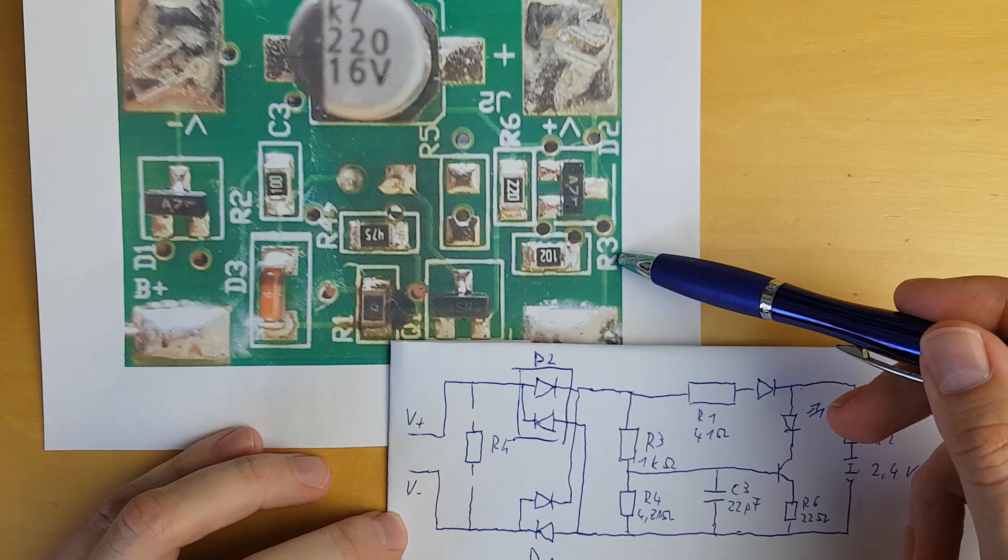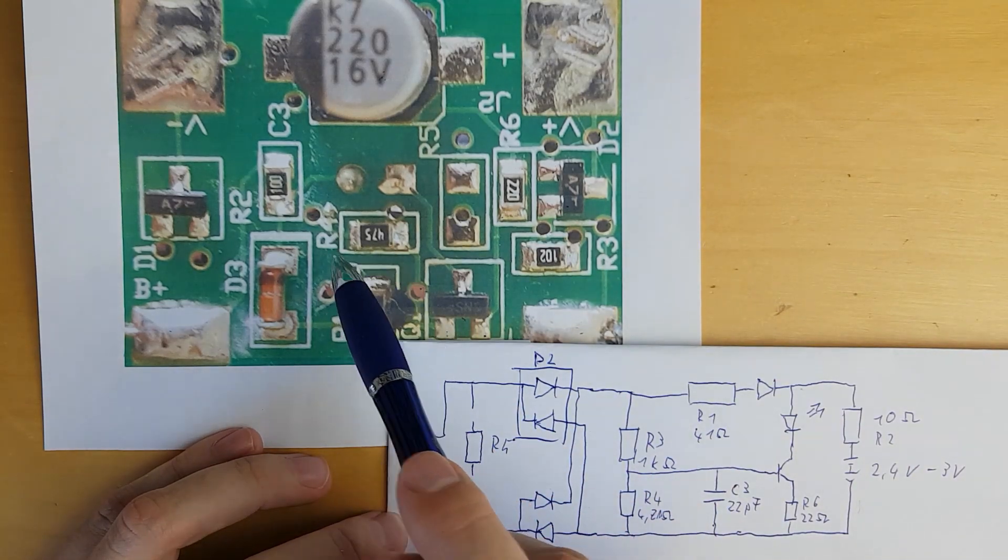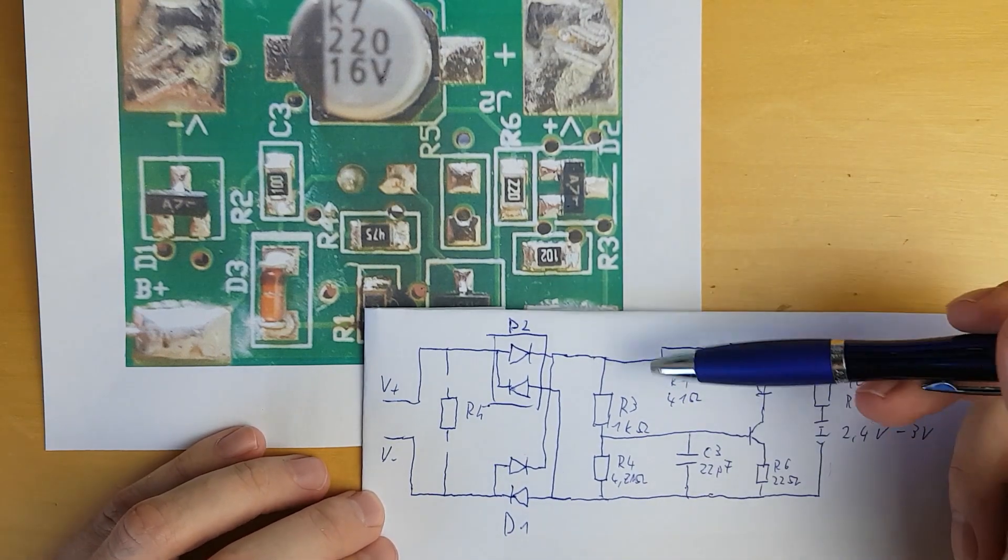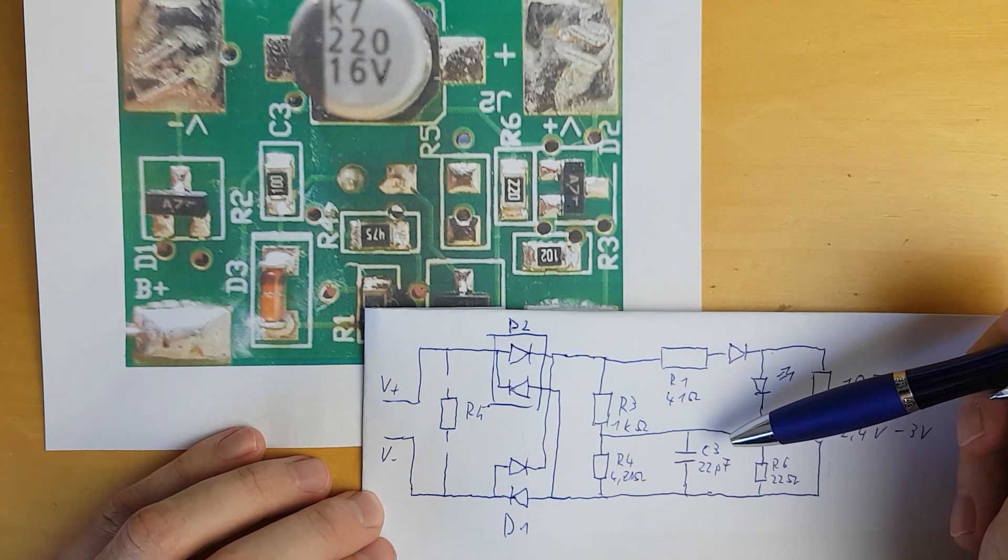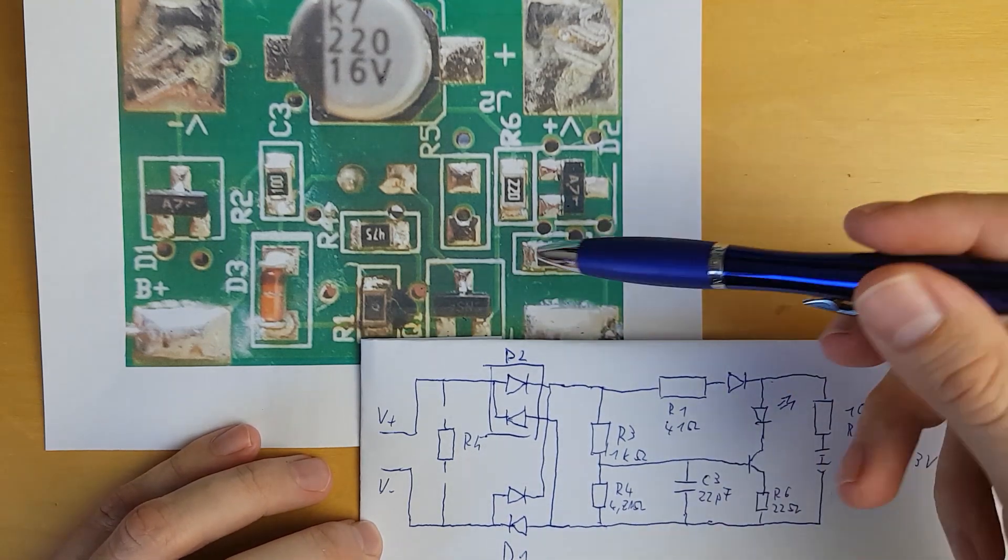And then we have a potential divider that charges this capacitor, made out of R3 with 1 kilo ohm and R4 with 4.7 mega ohm. Here this charges this capacitor, and as soon as it reaches the voltage threshold, the transistor will turn on.